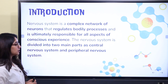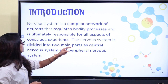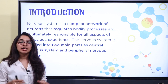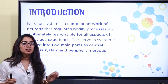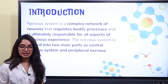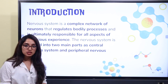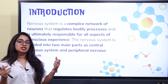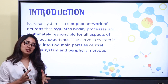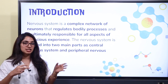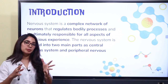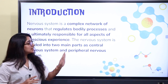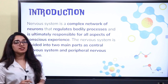Our nervous system is divided into two main parts: the central nervous system and the peripheral nervous system. We are going to focus on the central nervous system, as the peripheral nervous system is a smaller portion.